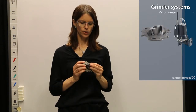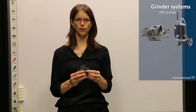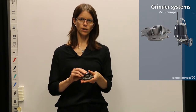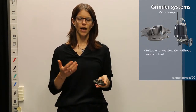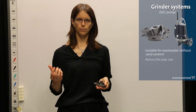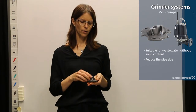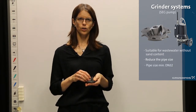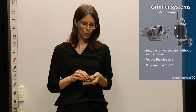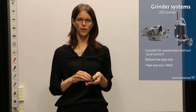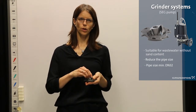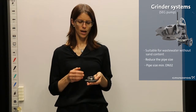The last part of this video is about grinders. Here you see the cutter system used in the SEG grinder pump. Using this cutter system, solids in the wastewater are fragmented into very small pieces, which means the pipe size in the system can be considerably reduced — with the SEG grinder pump you can use DN32 pipe. When operating a grinder pump it is very important that the flow is not too high, otherwise the cutter system will have problems processing the solids and the pump will stop.